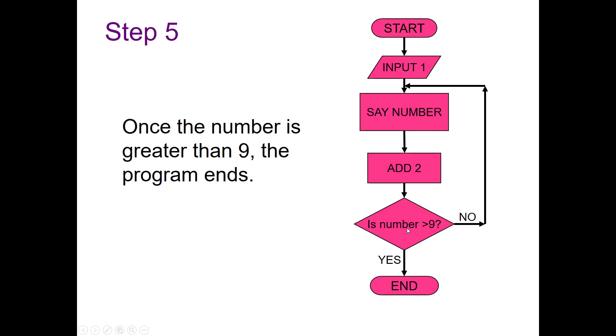Eventually we're going to get to the point where our number is greater than nine, and instead of going out this no branch, it'll go out the yes branch here, and it'll end the program or the flowchart.